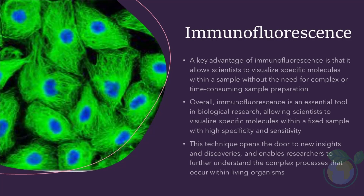A key advantage of immunofluorescence is that it allows scientists to visualize specific molecules within a sample without the need for complex or time-consuming sample preparation. This makes it an especially useful technique for studying fixed samples, as it allows for the detection of specific molecules without the need for extensive sample processing. In essence, if there is a primary antibody available to detect your nucleic acid, protein, or post-translational modification of interest, you can visualize it by immunostaining followed by fluorescence microscopy, in cells and tissue samples.